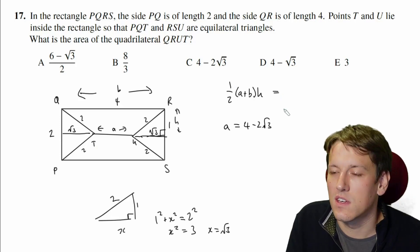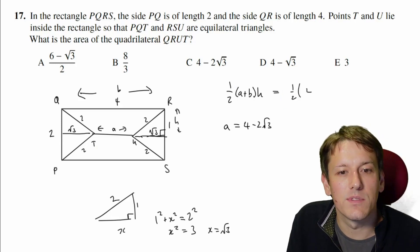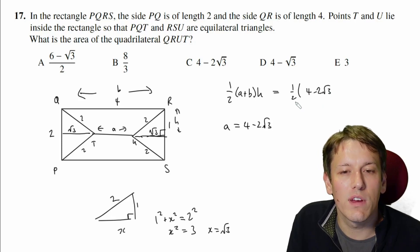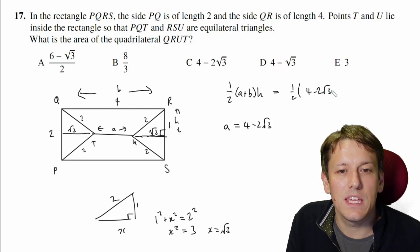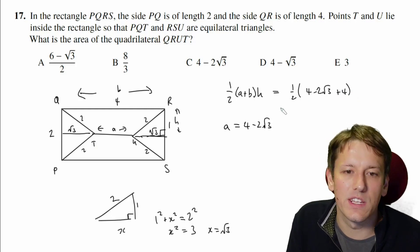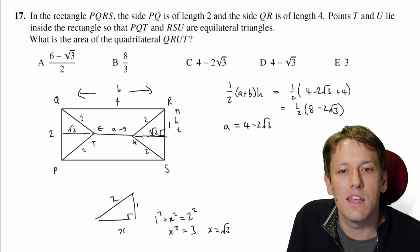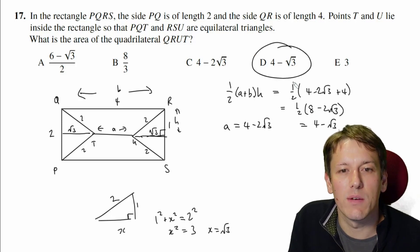And then we can just use this formula for the area of the trapezium to say the area will be a half times 4 minus 2√3. And then I can add on the B, which is 4, multiplied by H, which is times by 1, so I don't need to write anything here. So I've got a half of 8 minus 2√3. And so the answer here is just 4 minus √3, which is D.